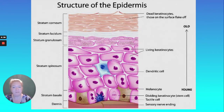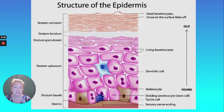The lucidum is only present in thick skin. Granulosum is where the cells are filling with keratin and dying. Basale has lots of division. Langerhans cells are in the spinosum, and melanocytes and keratinocytes are in the basale.